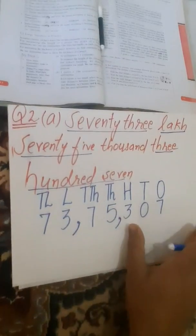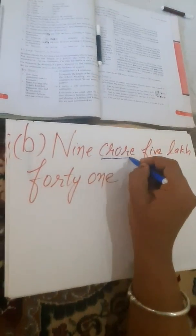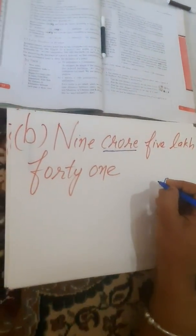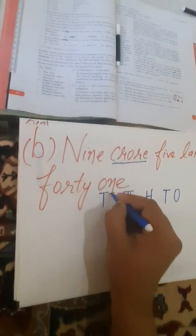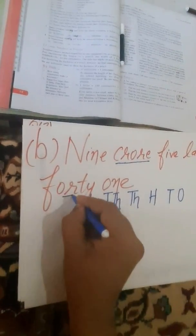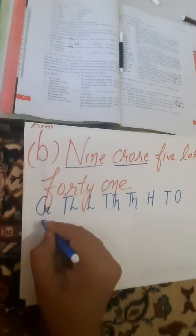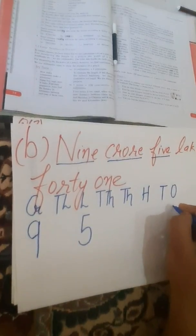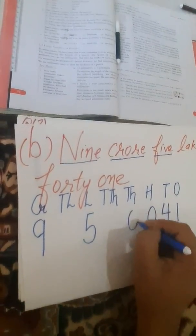Now the B part: 9 crore, 5 lakh, 41. Crore indicates this is in the Indian system. So I have to write all periods till crore: ones, tens, hundreds, thousands, ten thousands, lakh, ten lakh, crore. I will write 9 below crore, 5 below lakh, then 41 — writing 1 below ones place and 4 below tens place. Below all other periods I will write 0.